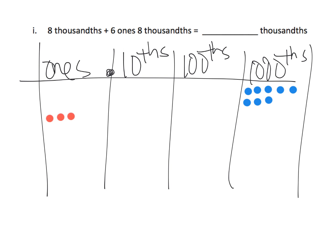1, 2, 3, 4, 5, 6. And then 8 thousandths. 1, 2, 3, 4, 5, 6, 7, 8. Alright, so now it's time for us to add.